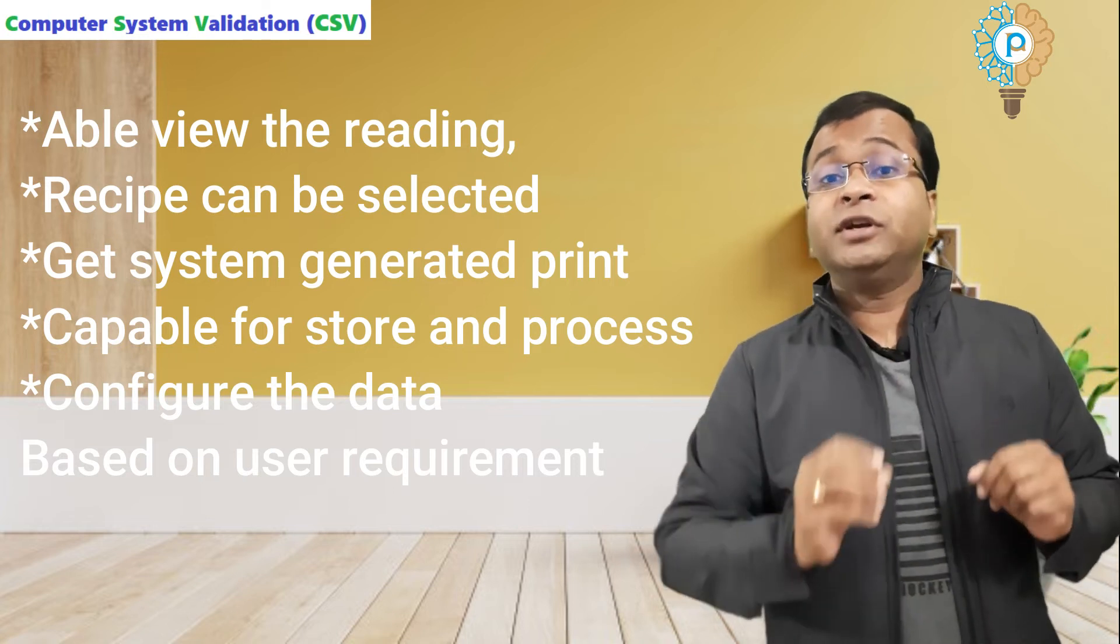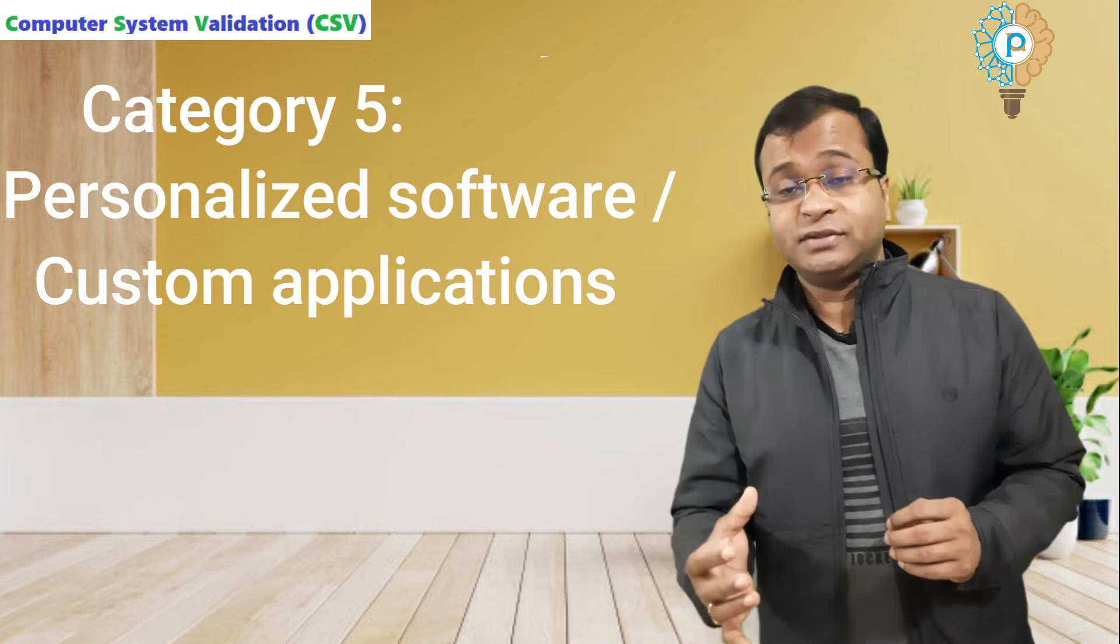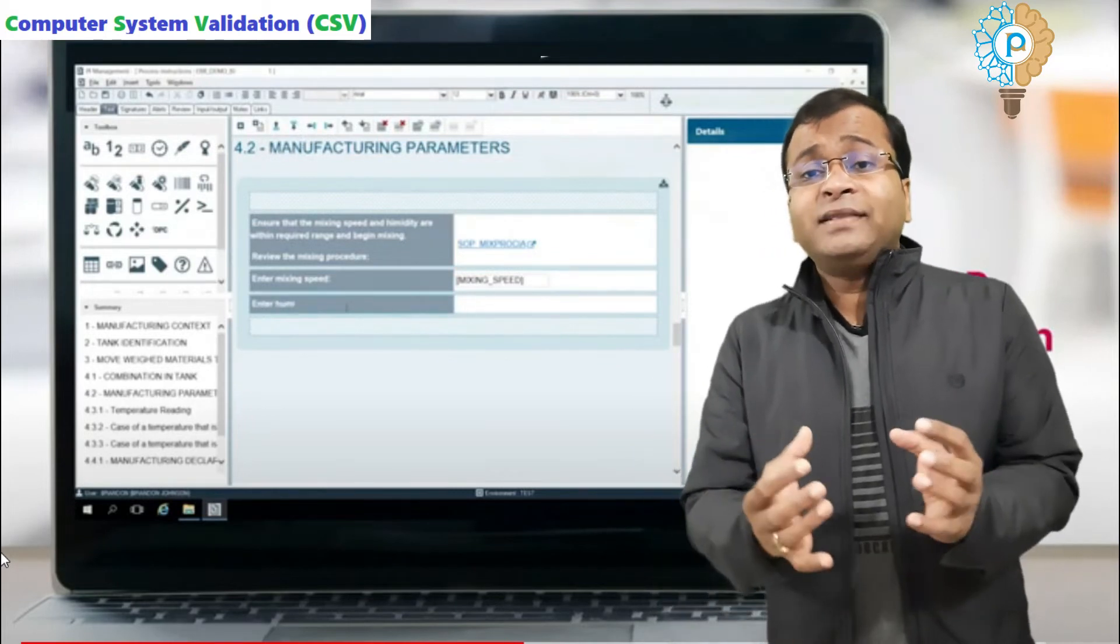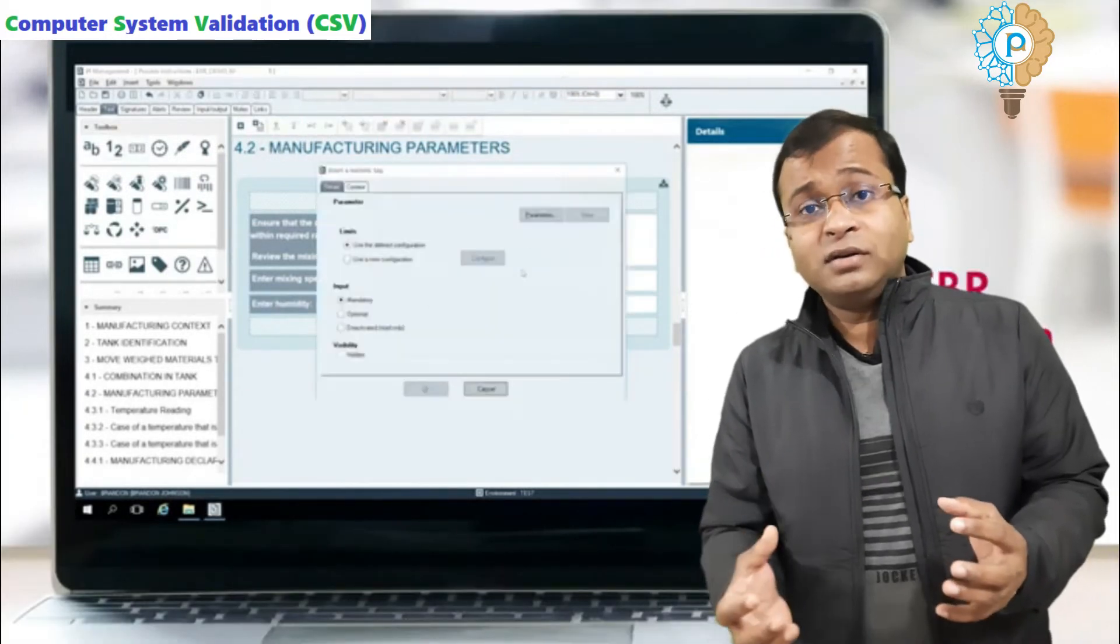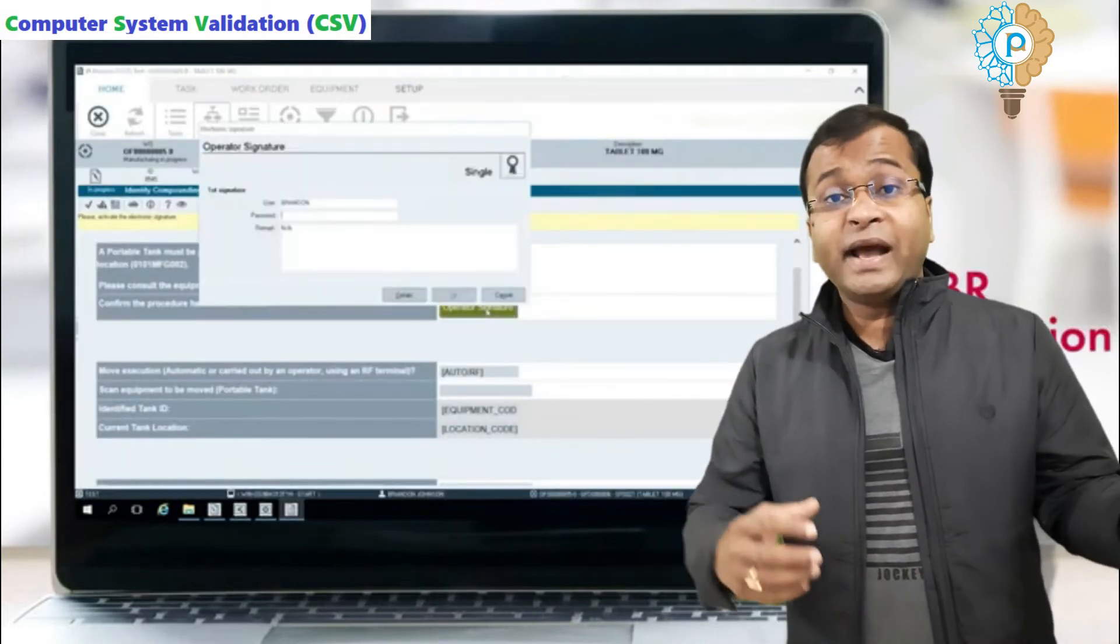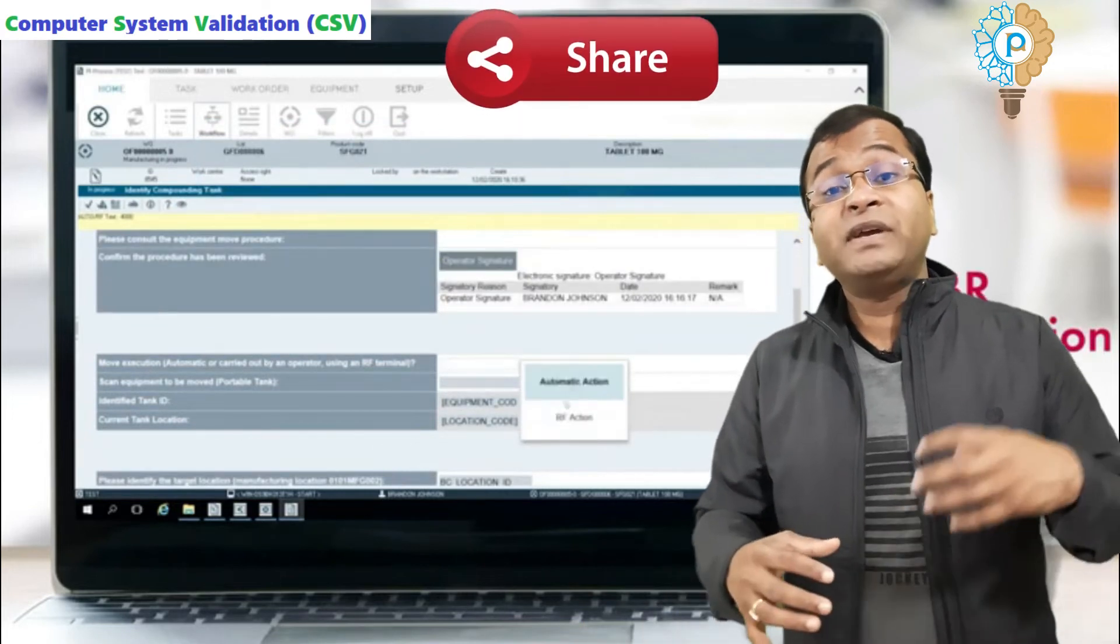Category 5 is personalized software and custom applications. This software is created to meet the customer's business needs only, like electronic batch records. This software is manufactured by one software company as per the customer requirement only, meaning this software is not previously created.